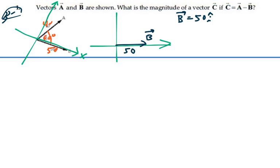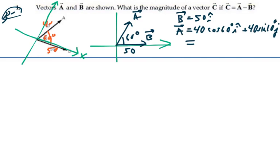And then A is going to be going up like this at a 60 degree angle. And that makes A equal to 40 cosine 60I plus 40 sine 60J. So that is equal to 20I plus 34.64J.